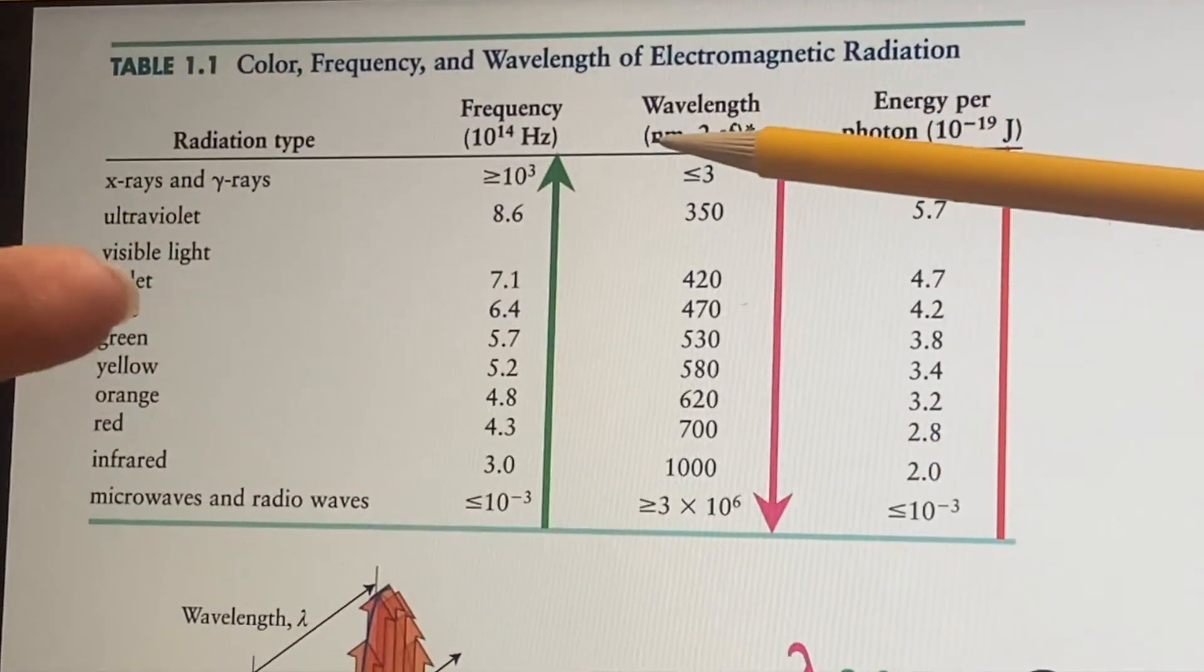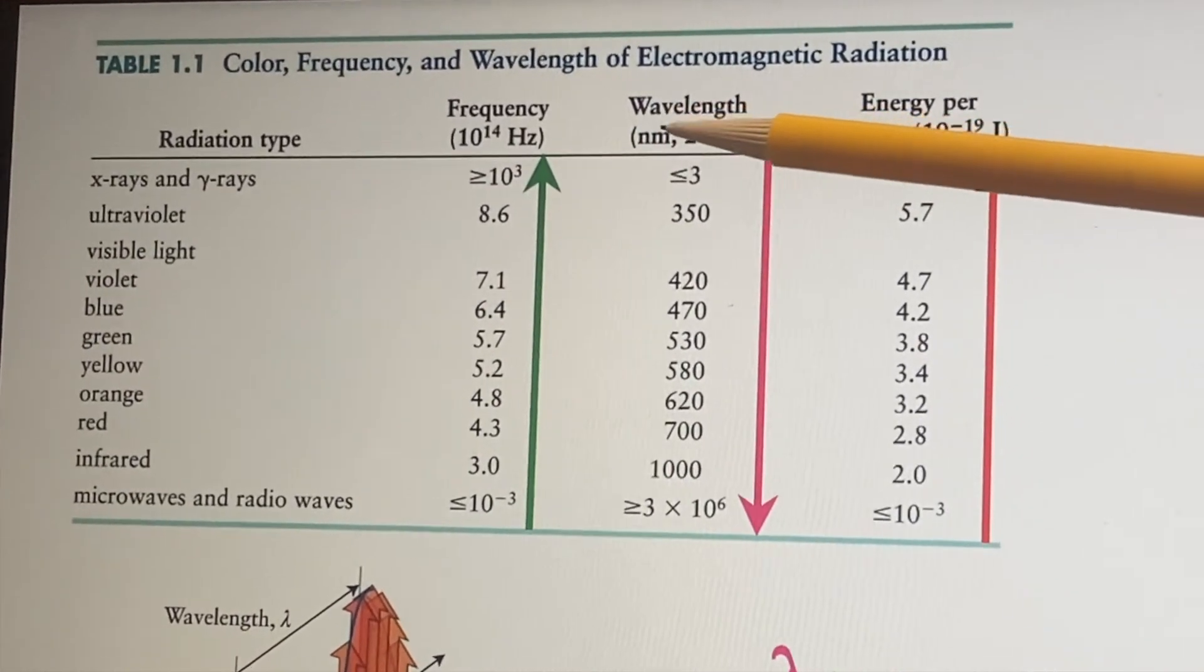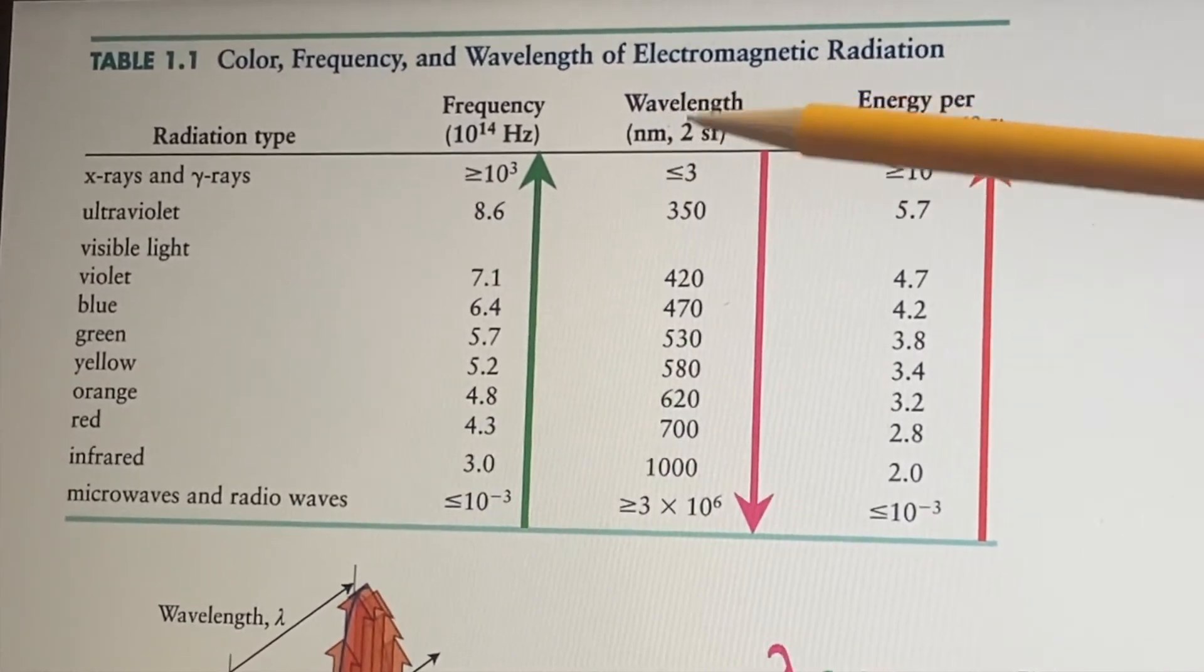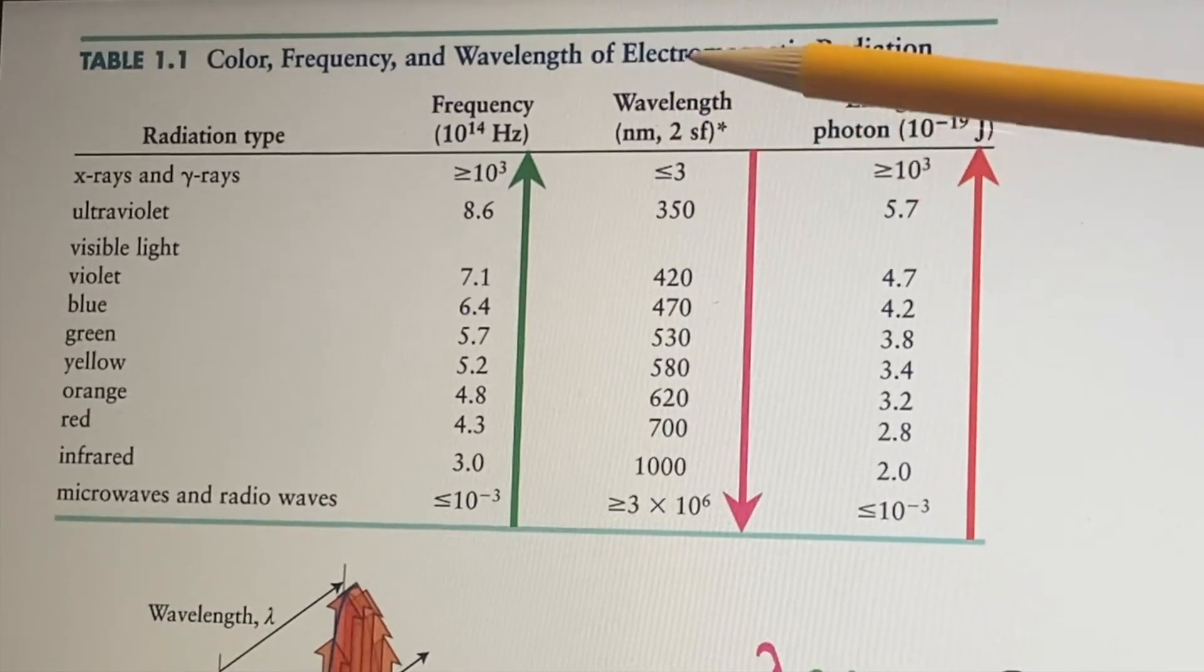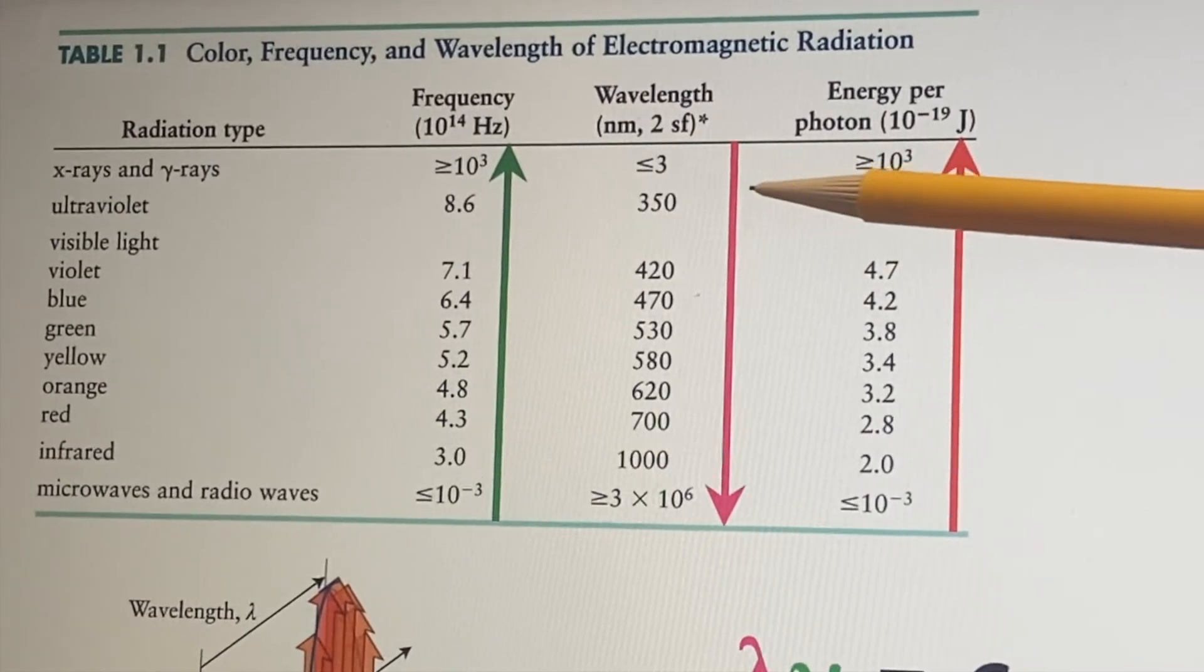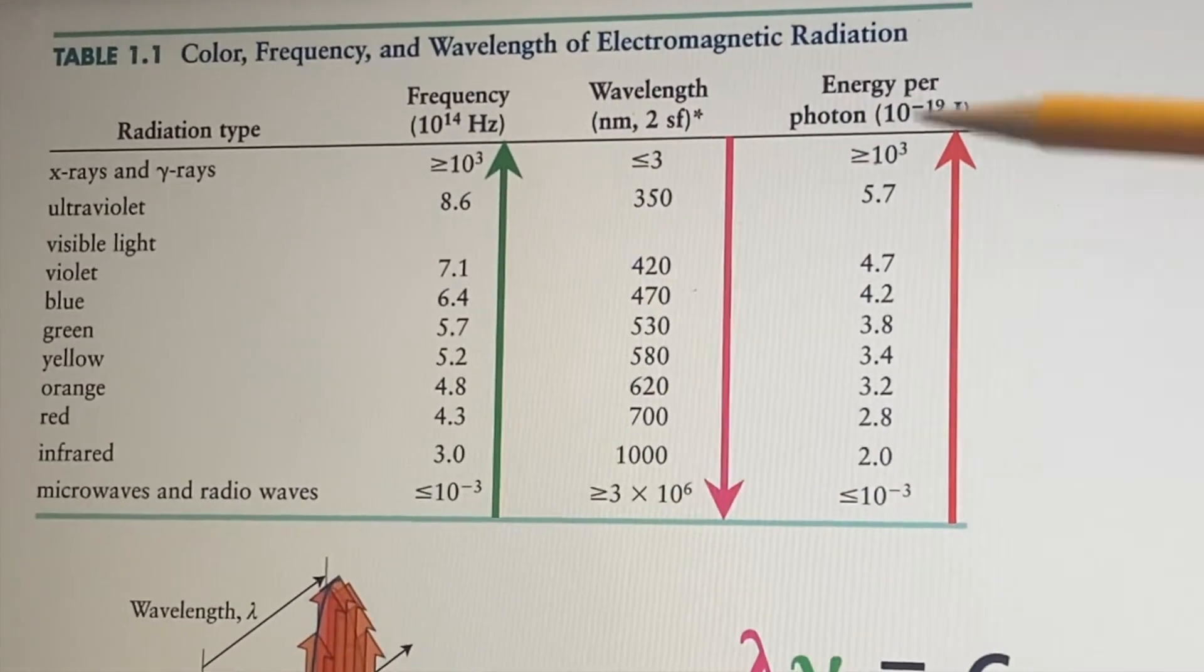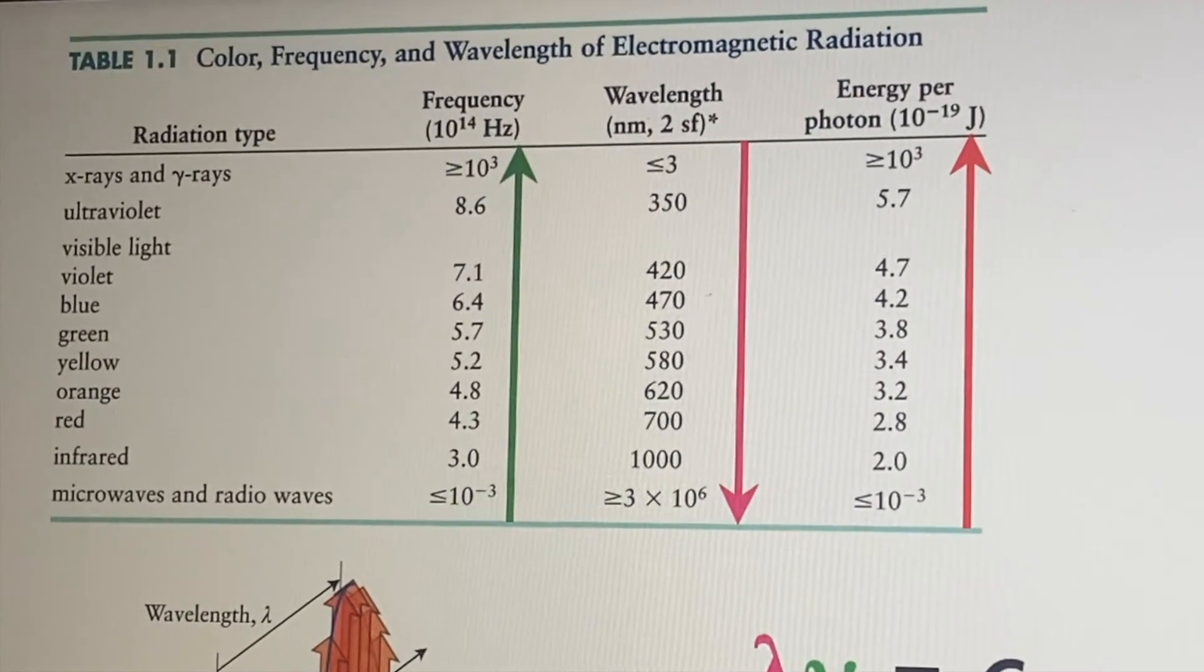These wavelengths are listed in nanometers. Nano. We have to remember that. Well, that was in a previous chapter, but nano meant 10 to the minus 9. So this would be 350 times 10 to the minus 9 meters. That's how we would deal with this. And the last column we'll talk about more on another slide.